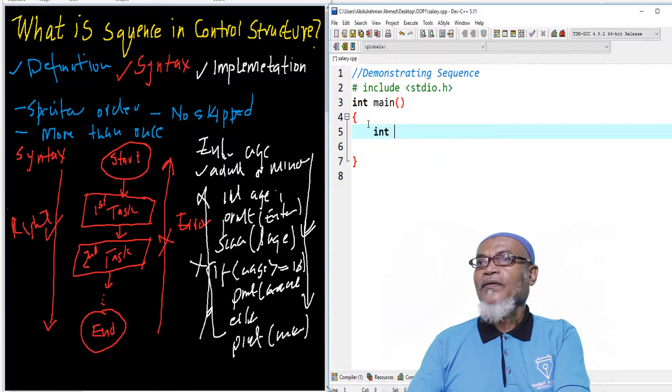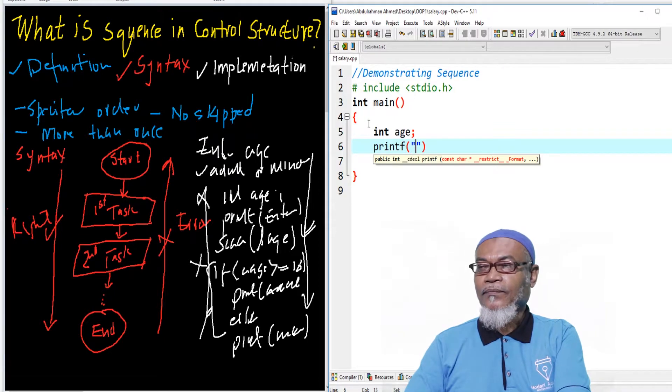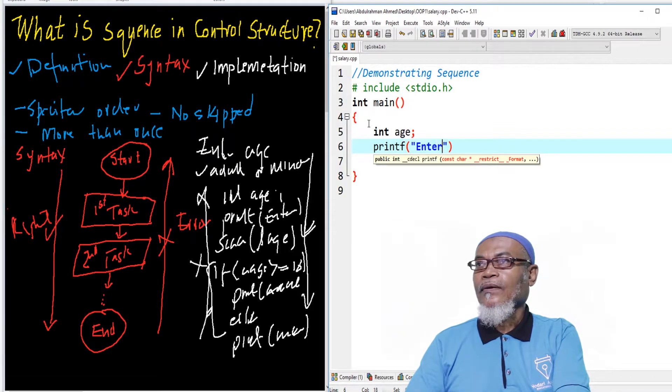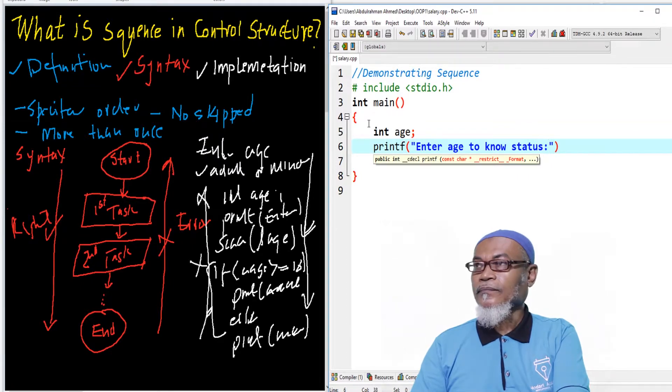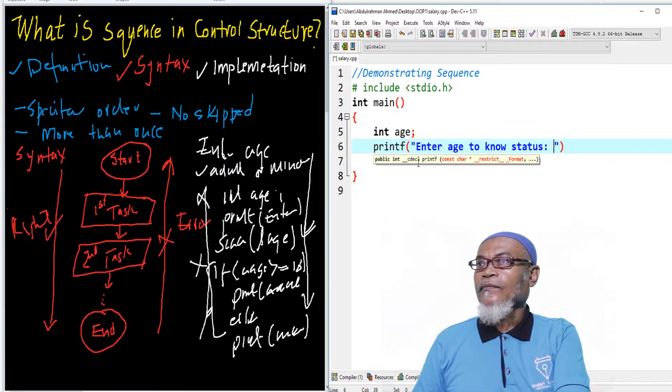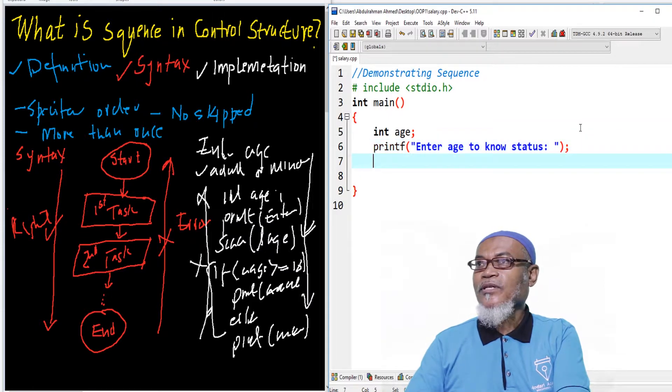So here, basically, we are saying int age. And then we're putting up our printf. And we are telling the user, enter age to know status. So all statements must be terminated. So we terminate that particular statement.